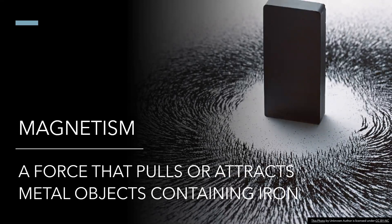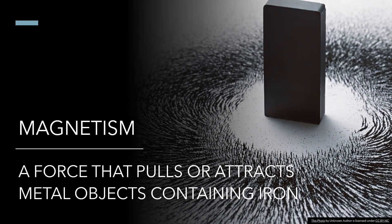The last thing we can measure about matter is its magnetism. Magnetism is a force that pulls or attracts metal objects containing iron. If you look at the picture in front of you, that big black brick is an entire magnet, and all the tiny black particles are objects attracted to it. Magnets are attracted to a specific type of material — iron. Magnetism is attracted to iron, so it is really important for you to recognize that.